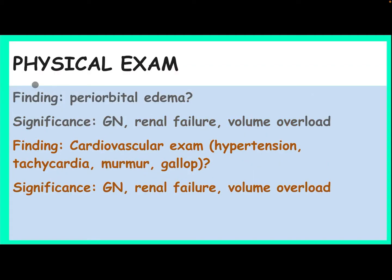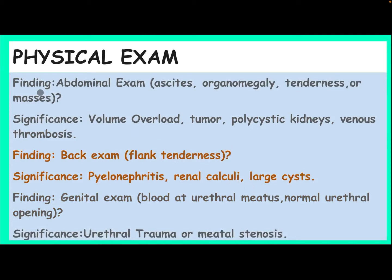Physical examination: Periorbital edema may be significant for glomerulonephritis, renal failure, or volume overload. Cardiovascular examination findings of hypertension, tachycardia, murmur, or gallop are significant for glomerulonephritis, renal failure, or volume overload. Abdominal examination findings of ascites, organomegaly, tenderness, or mass may suggest volume overload, tumor, polycystic kidney, or venous thrombosis.